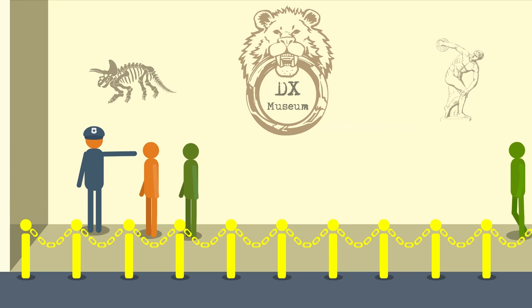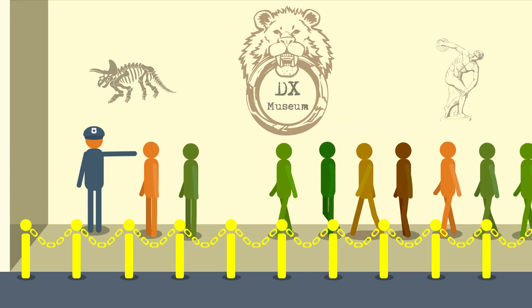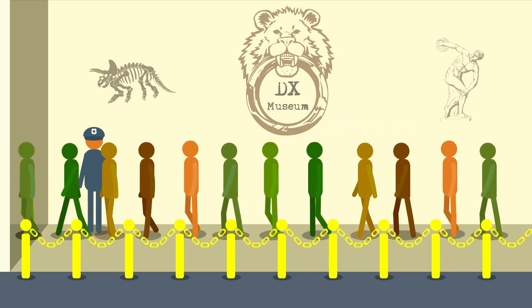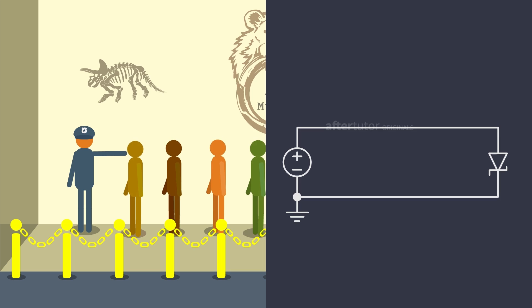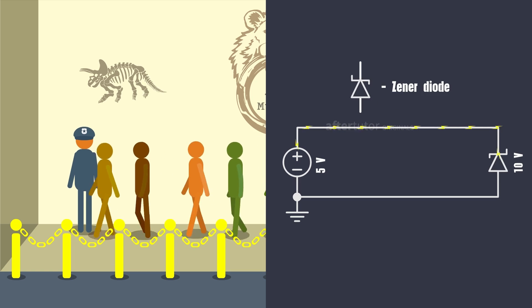As time passes, the count increases, but continuously he allowed only 10 people at a time. This scenario is similar to the functionality of a Zener diode, where the security guard is a reverse biased Zener diode, people represent the voltage, and the museum is the output.